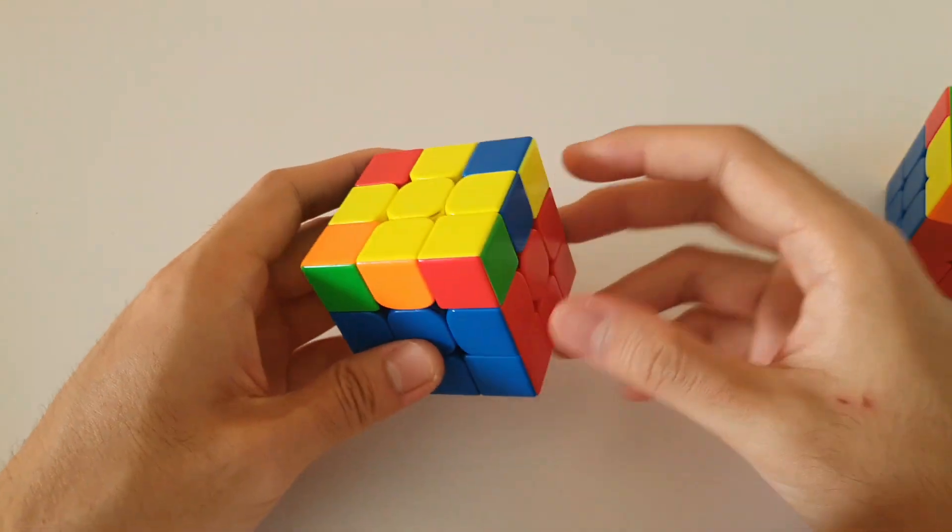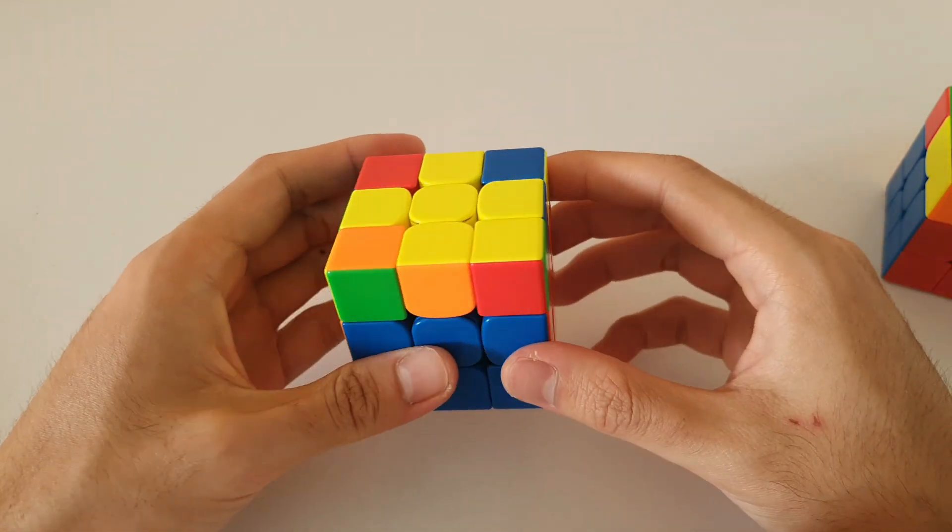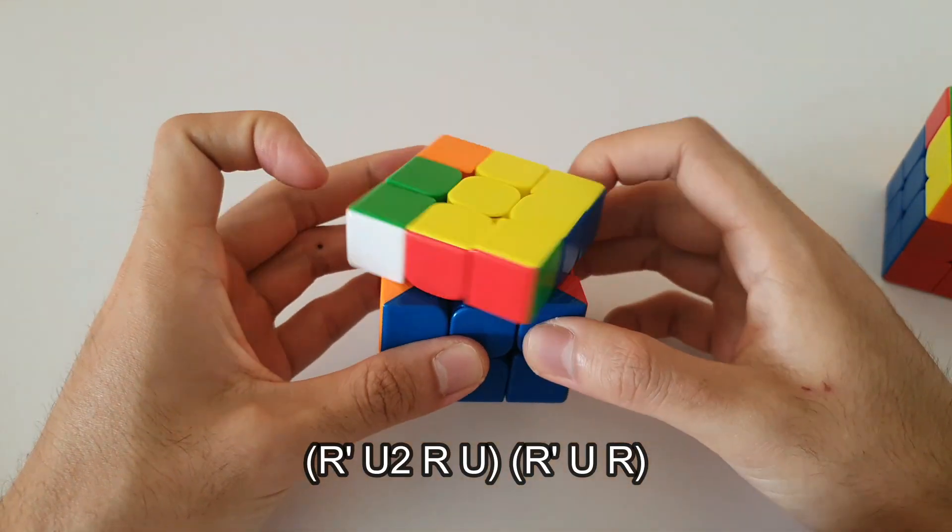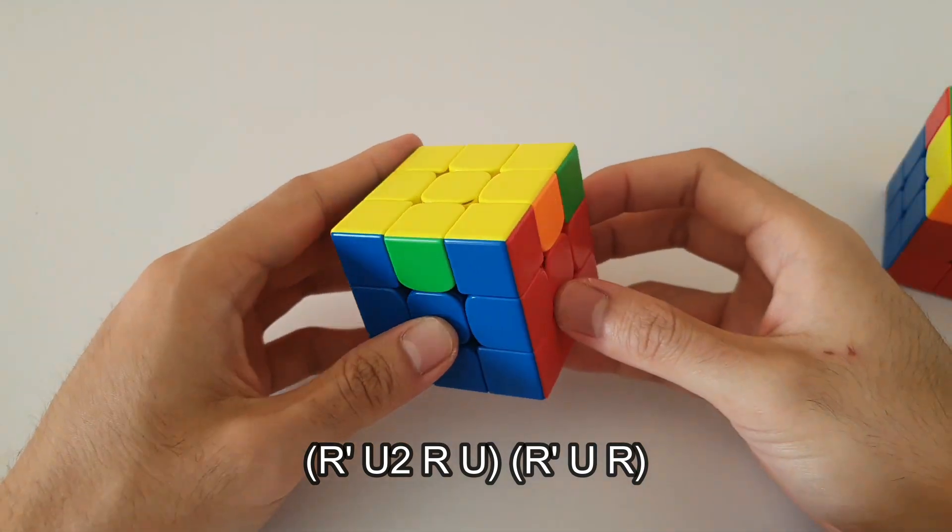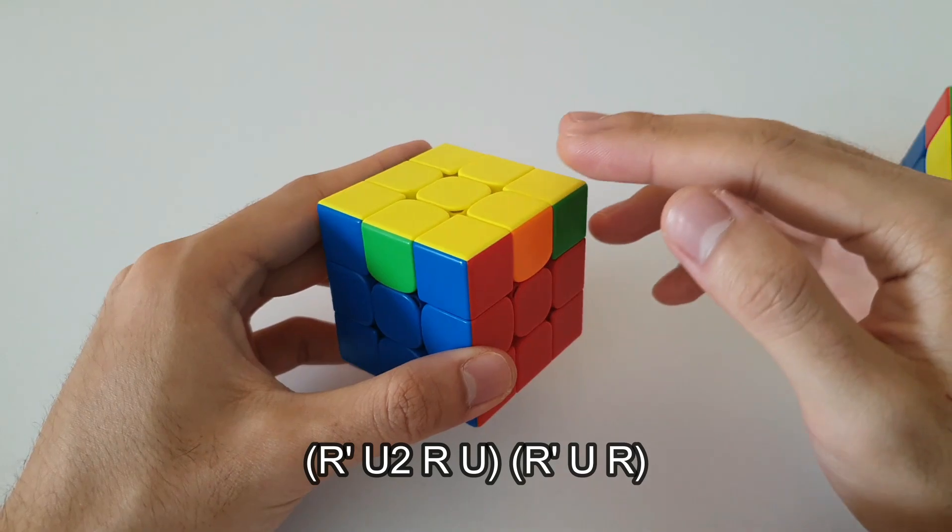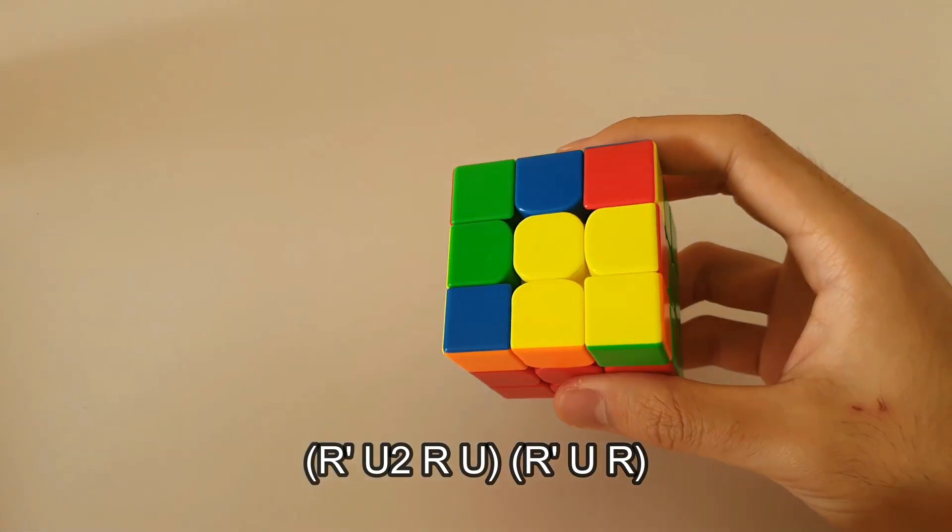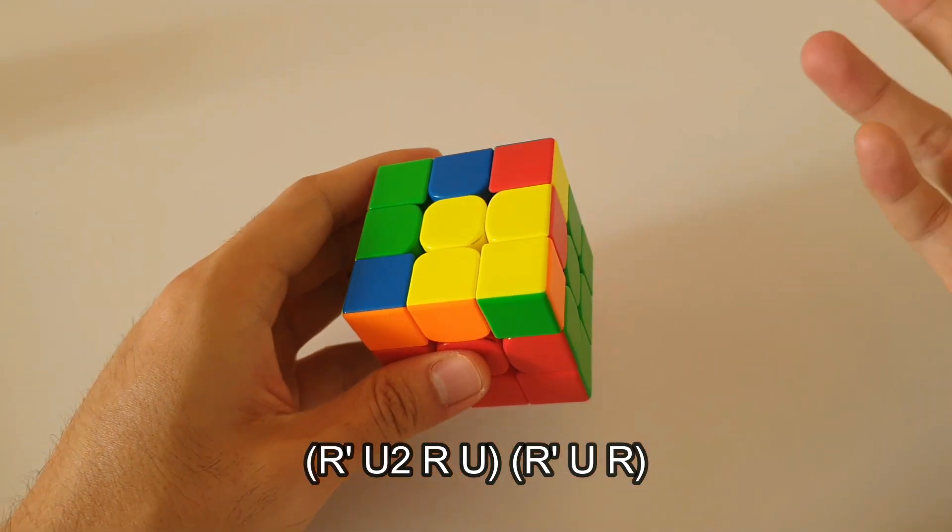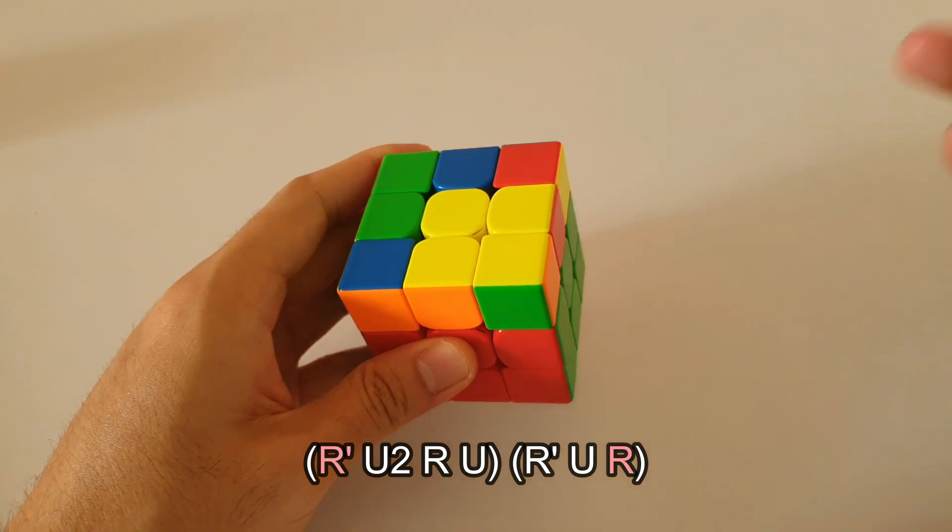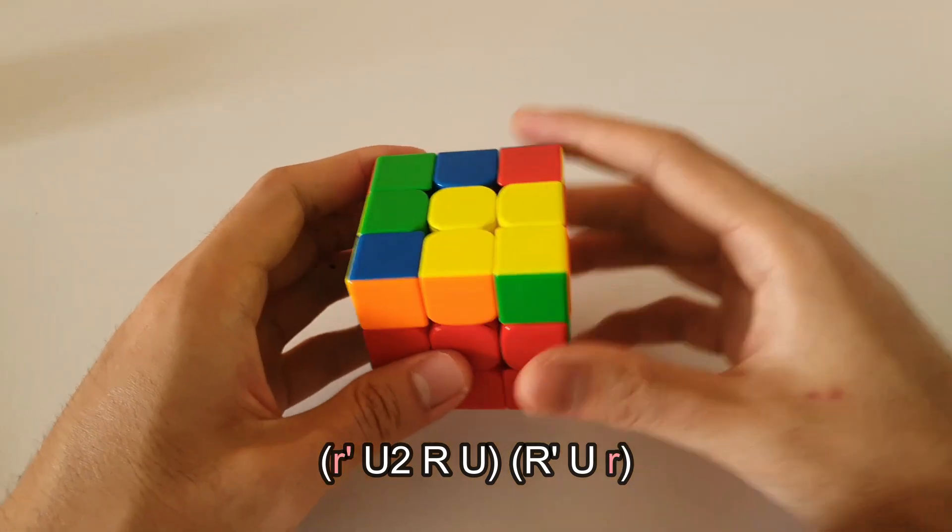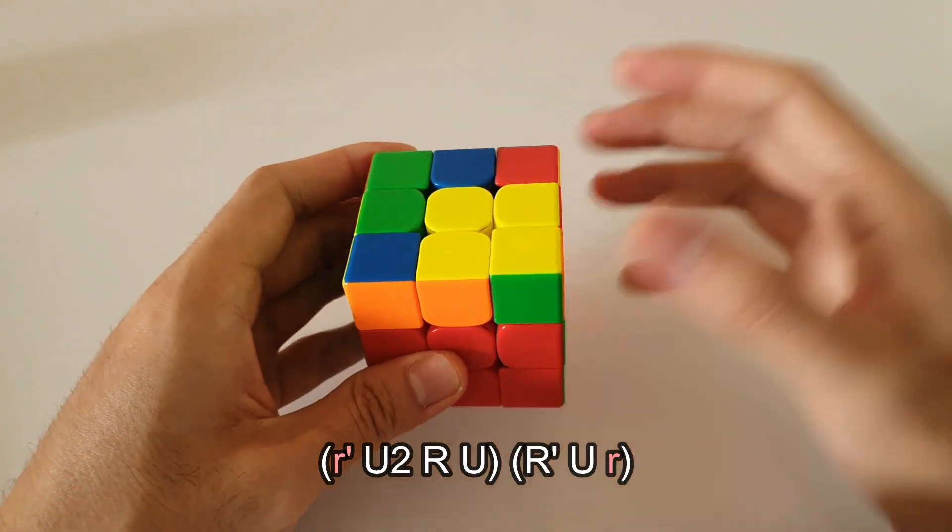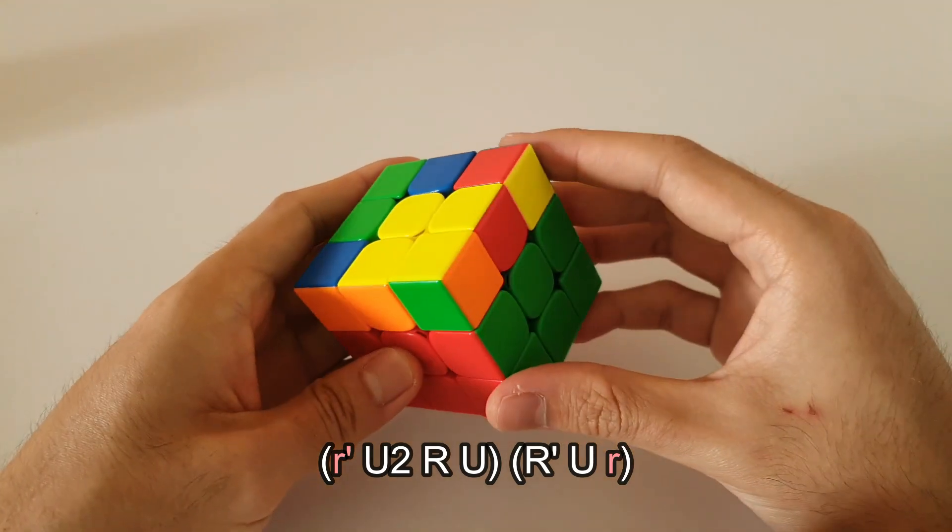Not the most common way for that case, but it is definitely a valid way to solve that case. And so moving back to this case, once again, the same variation can be applied. So the first move and the final move is going to be wide R moves rather than the single layer R moves. So the algorithm would look something like this. Alright,